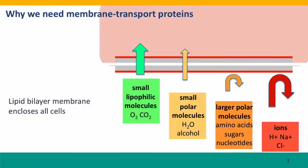So first, membrane transport proteins. The gray bands here represent the two halves of the lipid bilayer membrane that separates the insides of our cells from the outsides of our cells. This membrane is very good at keeping the insides in and the outsides out. But that's a problem if you need to get stuff in from outside or out from inside. Cells have evolved ways to do this, but what is needed depends on the kind of molecule.